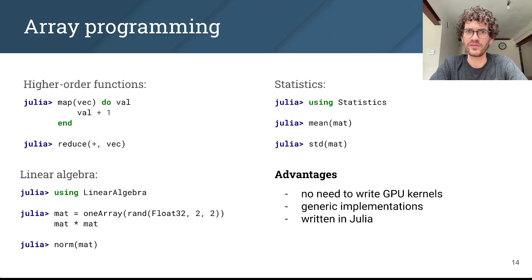For example, we have higher order functionality like broadcast, map, or reduce values that composes together with anonymous user functions. There's integration with standard libraries like LinearAlgebra.jl and Statistics.jl, and so on. So all of these operations make it possible to program Intel GPUs in Julia, often without having to write a single kernel.